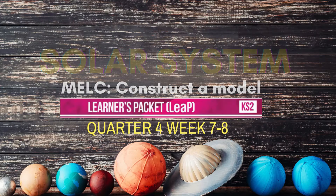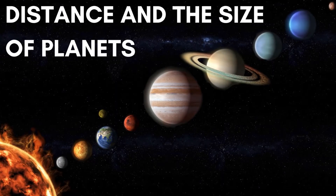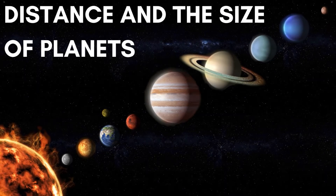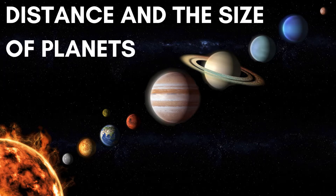Let's go! We will have a presentation on the relative distance and size of the planets. One by one, we're going to cover the distance from the sun and the equatorial diameter in kilometers — that is, the planet size. Are you ready, 6th graders? If you are ready, let us have this presentation.